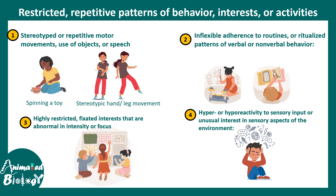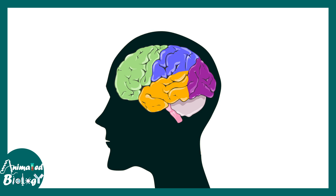Sometimes autistic children show hyper or hypoactive sensory responses. They might be agitated by a certain kind of sound, color, or texture. These sensory sensitivities are all very typical to autism, and overall there are many different types of phenotypes associated with the condition.